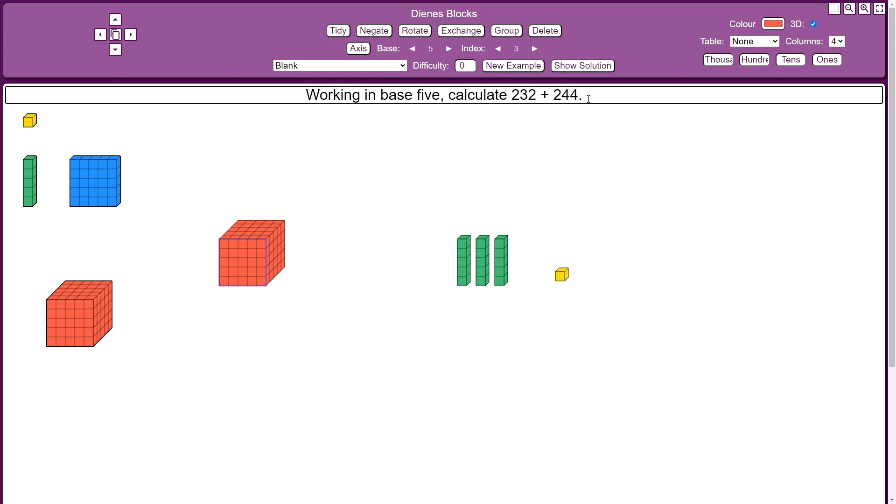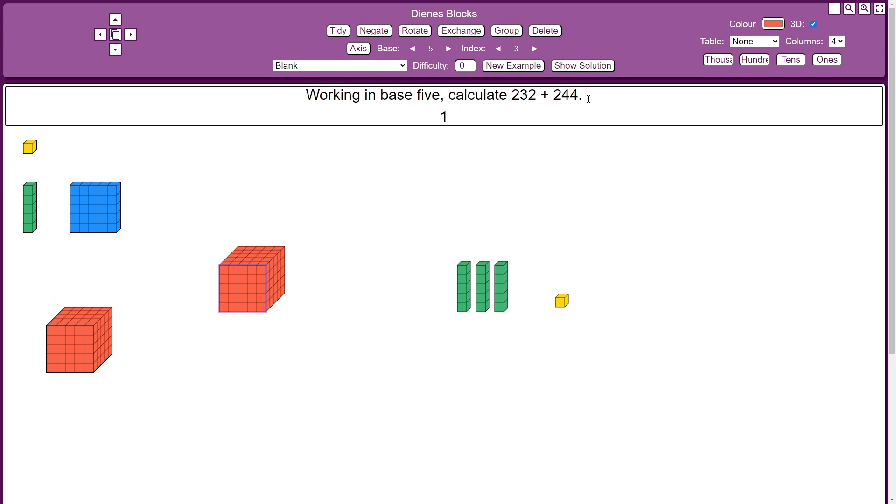Now what does the numeral look like for that? Well, I've got 1 group of 5 lots of 5 5s, 0 groups of 5 5s, 3 groups of 5, and then finally 1 unit. So 2 3 2 plus 2 4 4 in base 5 is equal to 1 0 3 1.